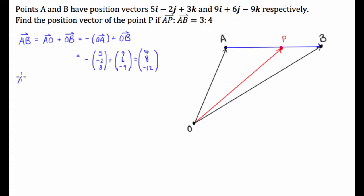So the vector AP is equal to 3 quarters of the vector AB. So this is equal to 3 over 4 times what we just figured out, 4, 8, negative 12.